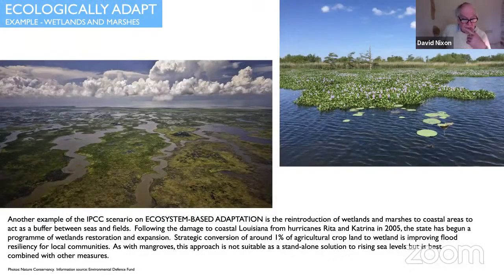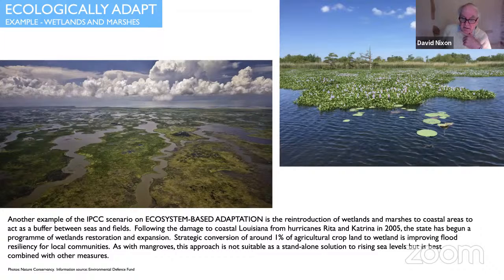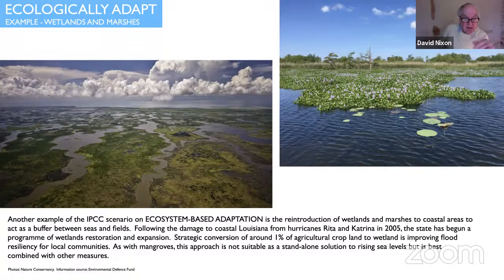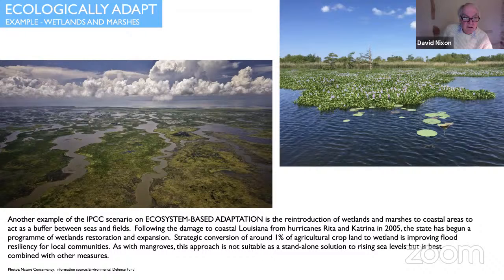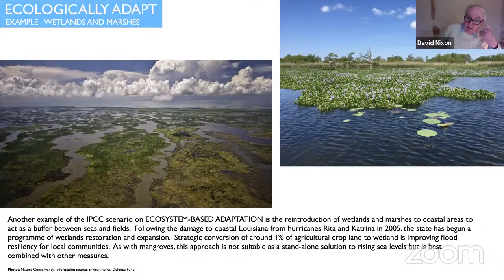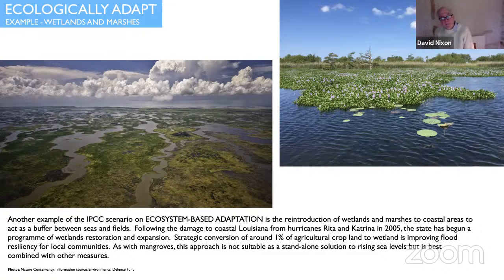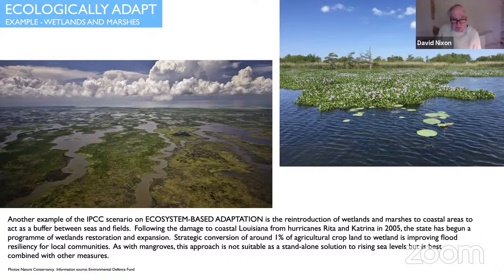Here's another one - wetlands and marshes, which they have been using in Louisiana in the southern United States to provide a barrier over a much larger area between the sea and the land. Following the damage to the coastline in Louisiana from hurricanes Rita and Katrina in 2005, the state began a program of restoration and expansion, converting around 1% of agricultural cropland to wetland. And that has worked very well. It's not a standalone solution like the mangroves we've just seen. These can't necessarily be single solutions to a problem, but they can be used in conjunction with other techniques to reduce the impact of rising sea levels.